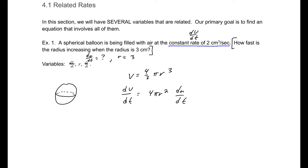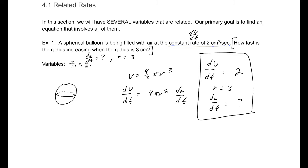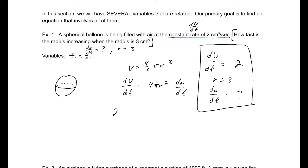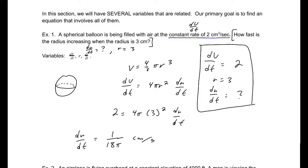Now, once we've done this, we need to look at what information we have. We know that our dv/dt is 2. We know that at some point our r is 3, and our dr/dt we don't know. Now that we've taken the derivative, we plug things in and solve. So dv/dt is 2, equals 4 pi, r value is 3, so 3 squared times dr/dt. Dividing both sides by 36 pi gives us dr/dt equals 1 over 18 pi centimeters per second.